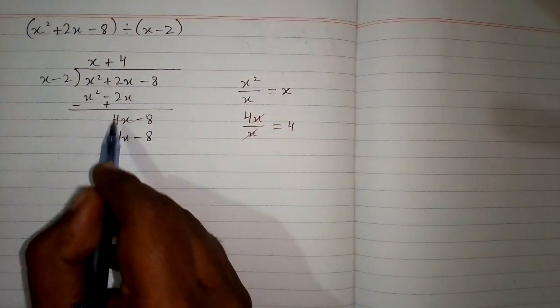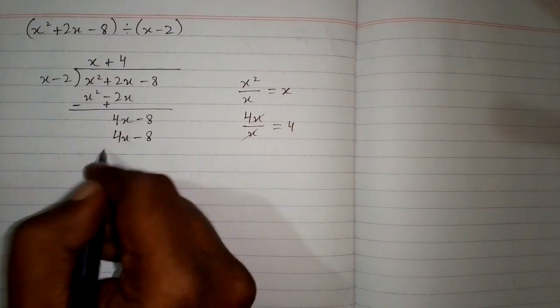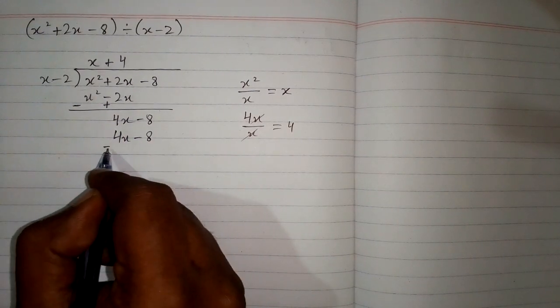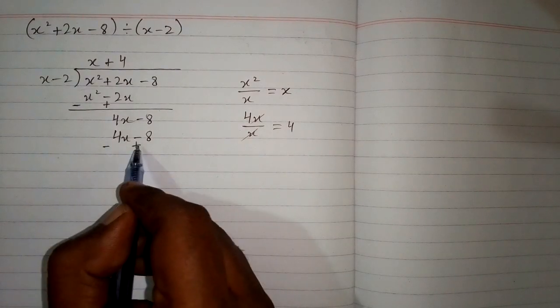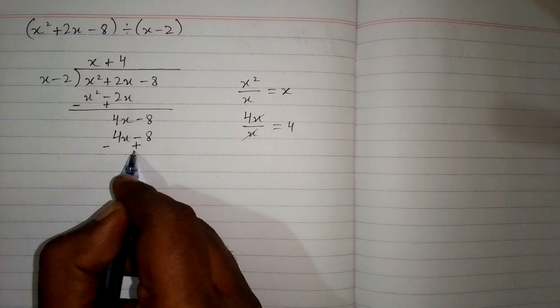Again we will subtract these two polynomials, so we will change the sign of the second polynomial. Plus 4x becomes minus 4x and minus 8 becomes plus 8.